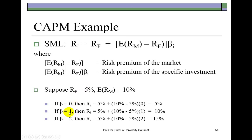On the other hand, if the stock's beta is 1, meaning the stock is just as volatile as the market, then the risk premium of the stock would be identical to that of the market. The risk premium of the market is the expected return of the market — 10% — minus the risk-free interest rate of 5%, giving a market risk premium of 5%. Multiplied by a beta of 1, it's still 5%. Adding that to the 5% risk-free rate comes out to be 10%, which is the expected return on the market.